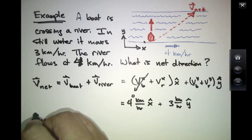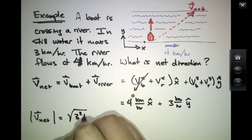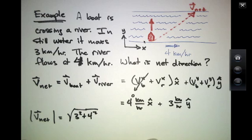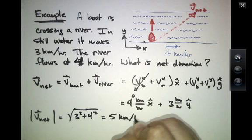And the magnitude of the net is the sum of the squares of the two components, which is 5 kilometers per hour.